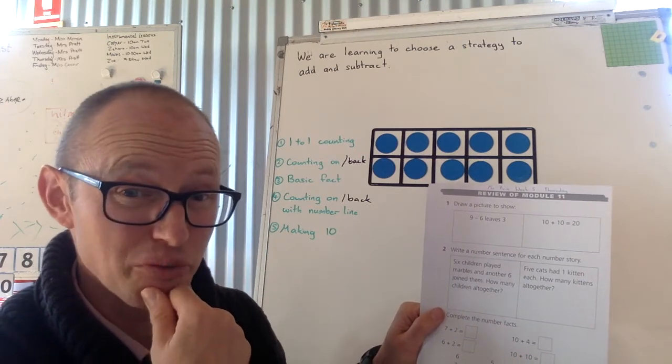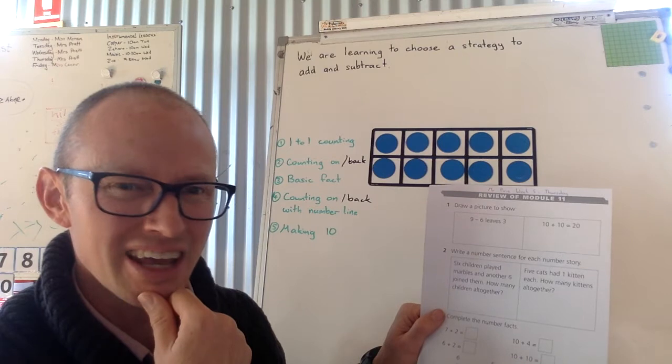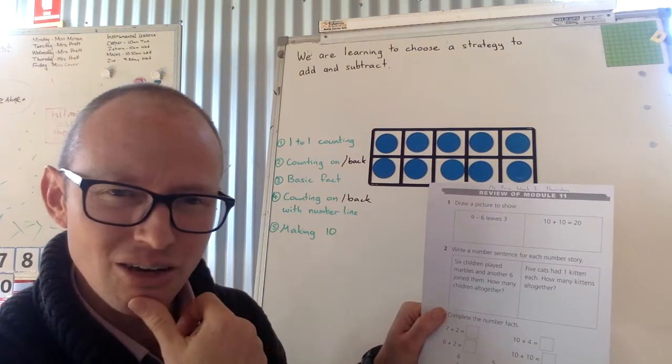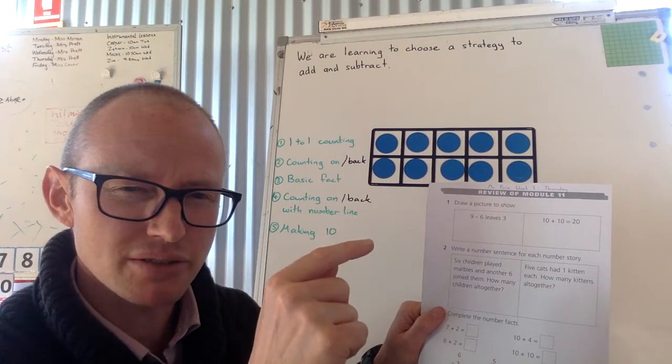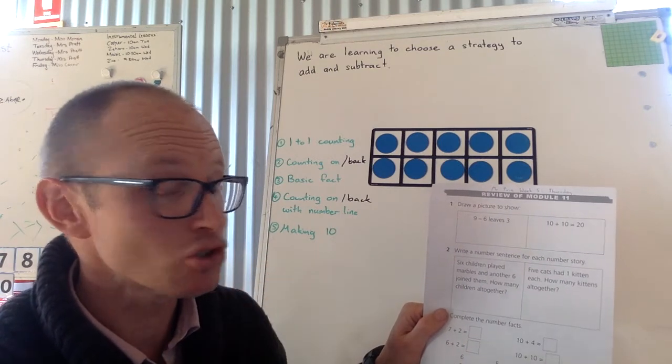Oh man. This one here might need a bit of a picture to help you sort of see this one here and then what is it actually asking? Five cats. One kitten each. Is that one plus one plus one? Tricky.